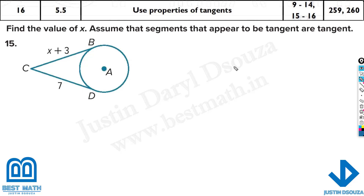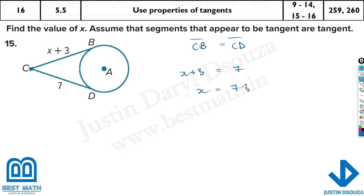Now we move to a different type of problem — still about tangents. Both tangents from circle A share the same exterior point C, so they are equal: CB equals CD. CB is x plus 3, which equals 7. So x equals 7 minus 3, and x equals 4. You don't even need a calculator here.